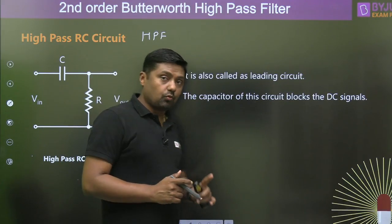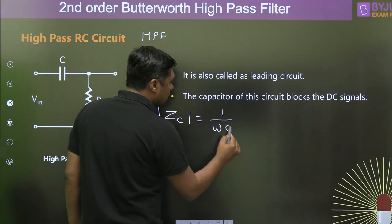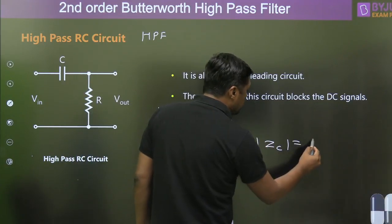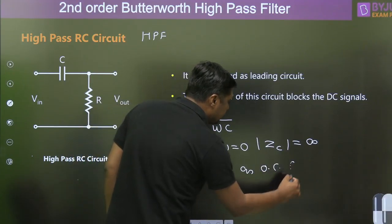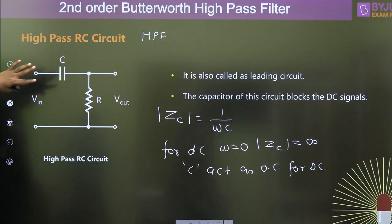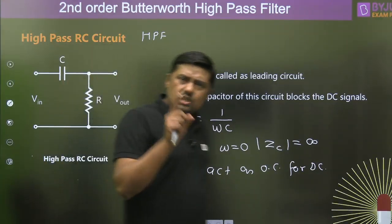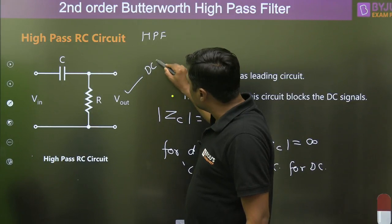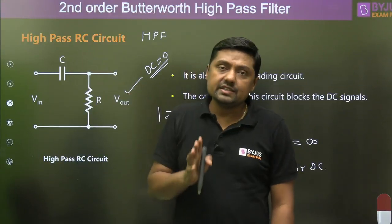Always remember: the impedance because of the capacitor is Zc = 1/ωC. For DC, ω = 0, so Zc = infinite, and therefore the capacitor acts as an open circuit for DC. That is why this capacitor is called a DC blocking capacitor. In the case of a high pass filter, the DC output will always be zero, because this capacitor will block all DC components.